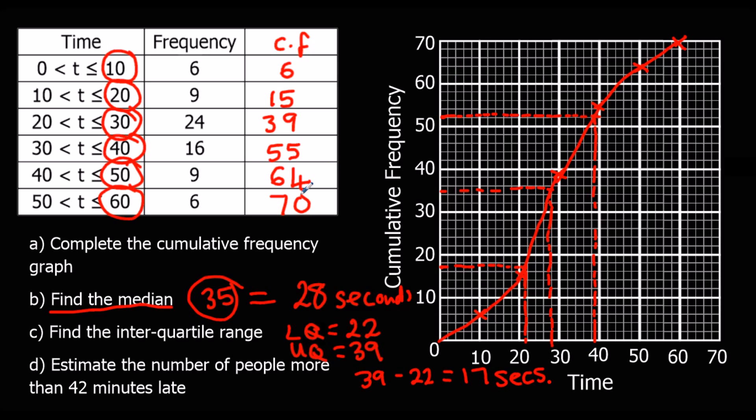Usually you'll find that these numbers are actually easier. And it's normally 80, so a quarter would be 20. Or 100, a quarter would be 25. They're not usually 70. Estimate the number of people. The number of people more than 42 minutes late. So these were actually minutes. Let's change them to minutes.